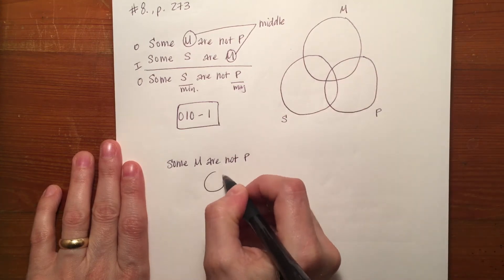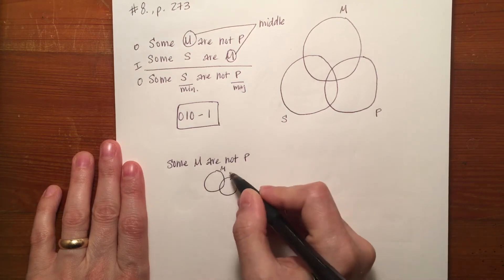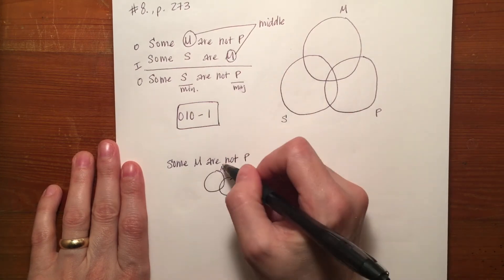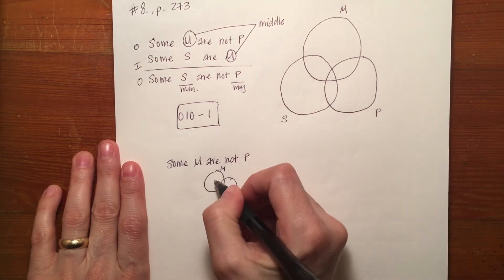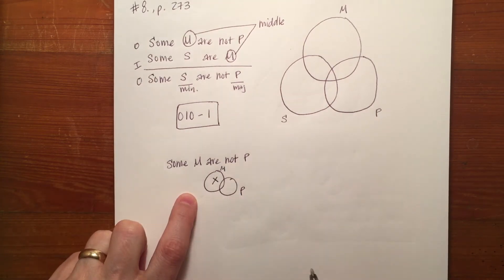But if I wanted to say some M are P, it might help me to look just at the M and P circles. I want to say that some M are not P. So my X in this case would go in this larger part of M.